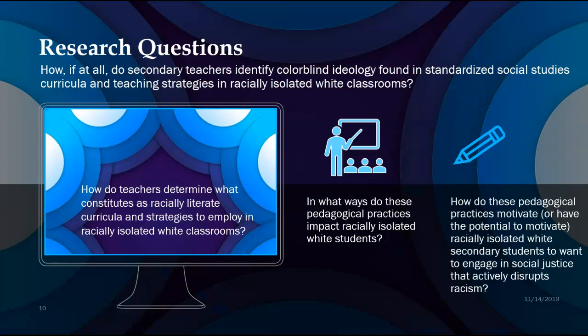The overarching research question is: how, if at all, do secondary teachers identify colorblind ideology found in standardized social studies curricula and teaching strategies in racially isolated white classrooms? The other three research questions address how teachers determine what they feel are racially literate curricula and strategies and how they employ them in their classroom, how these strategies impact students and what their reactions are, and finally, whether we can identify any practices that motivate or have the potential to motivate racially isolated students to engage in social justice.